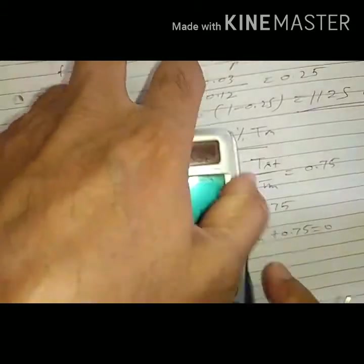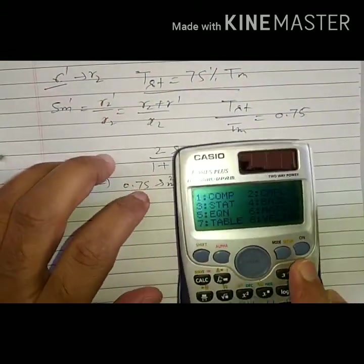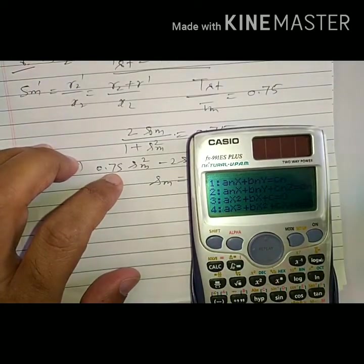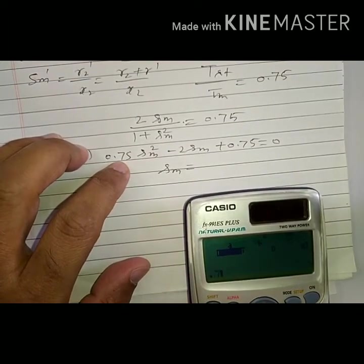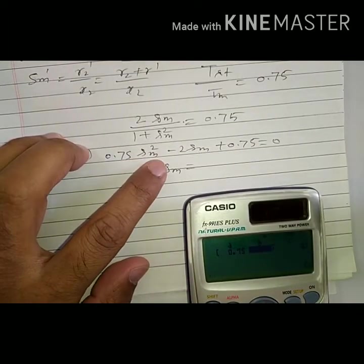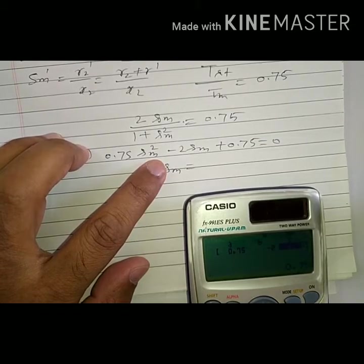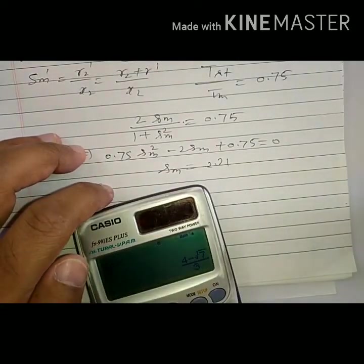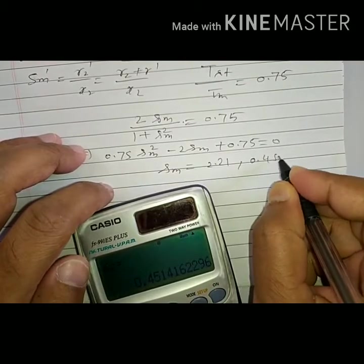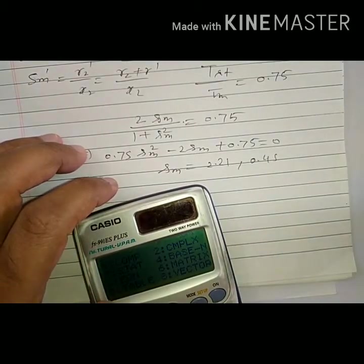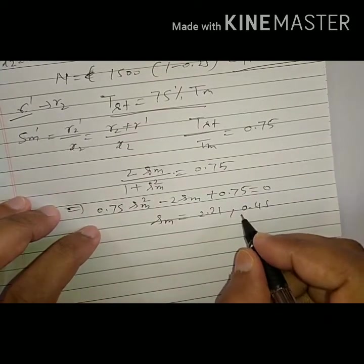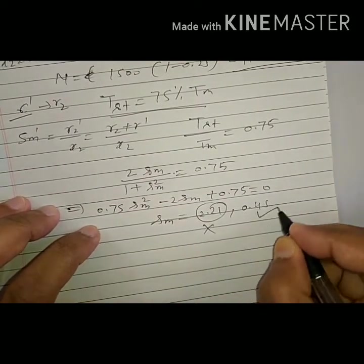This is a quadratic equation and we must find SM. So by calculator we can solve it. The factors are 0.75, minus 2, and 0.75. We got SM as 2.21 and second 0.45.